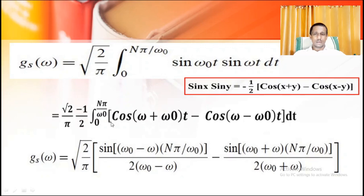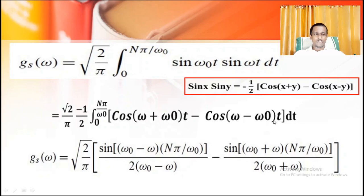On integration, the integral of cos(x) = sin(x). Note that we have a negative sign from the identity, and also a negative sign in the second term — negative and negative gives positive. The integral of cos((ω−ω₀)t) gives sin((ω−ω₀)t) divided by (ω−ω₀). Applying the lower limit, sin(0) = 0. Applying the upper limit with t = nπ/ω₀ gives sin((ω₀−ω)·nπ/ω₀) divided by (ω₀−ω), with the factor of one-half.